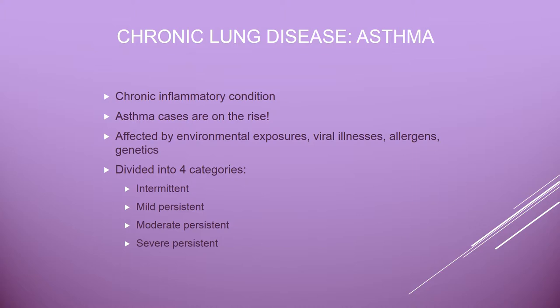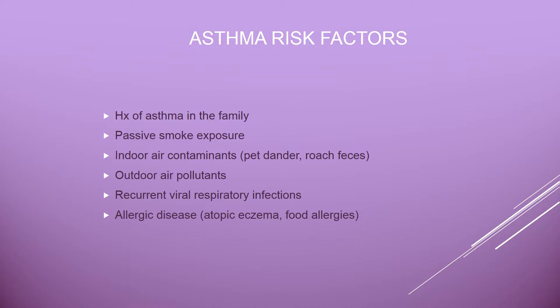Children with asthma missed an average of 3.8 days of school. About 32.5% made a visit to the ER because of asthma, and 8% ended up hospitalized. As of 2011, there are 174 deaths per year due to asthma. Asthma is divided into four categories meant to help with management. There are more than 100 genes associated with the susceptibility and pathogenesis of asthma.